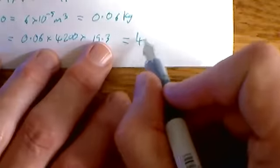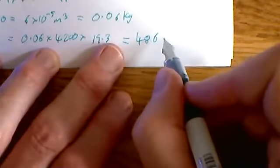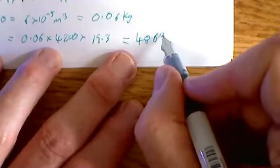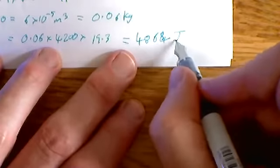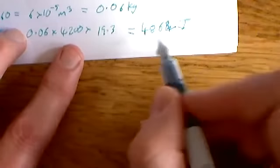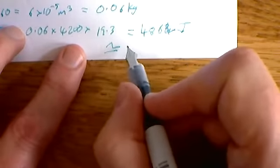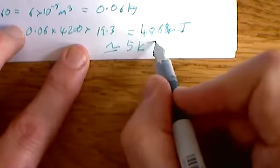We get 4863.6 if we round it up, which is joules. That's just under 5000, so that is approximately equal to five kilojoules.